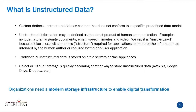Let's define unstructured data. Gartner defines it as content that does not conform to a specific predefined data model — basically data that's not necessarily in a database. Another way to define it is as a direct product of human communication: office documents, email, speech or voicemail, images like pictures on our iPhones, video, and things of that nature. We call it unstructured because it doesn't have the structure required for applications to interpret it — you've got to open the Word document to see what's in it.